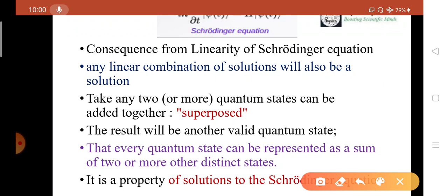To understand it quite clearly, suppose you can take any two quantum states and add them together, means they are superposed. The result will be another valid quantum state, and every quantum state can be represented as a sum of two or more other distinct states. It is the property of the solution of the Schrödinger equation.